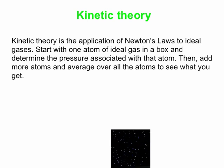So the starting point generally is to place an atom, a single atom of ideal gas in a box, and you then look at the pressure associated with that atom as it bounces off the walls. And then you add a whole bunch more atoms so you kind of average over everything to see what happens. So we're just going to go straight to the results.